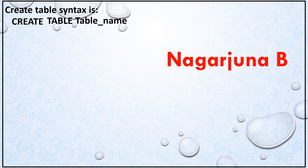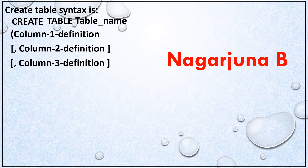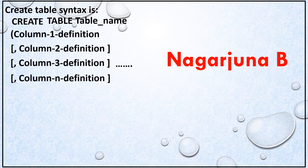After writing CREATE TABLE table_name, you open a bracket and write column 1 definition. Then column 2, column 3, up to column N definition — these are indicated in square brackets, meaning they are optional. Column 2 onward is optional; you must have at least one column definition.